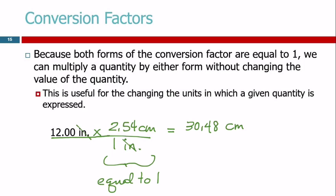What about significant figures? How many sig figs does 12.00 inches have? You might see 12 inches, associate it with 1 foot equals 12 inches, and think it's an exact number — but this is just a measurement of a length, so 12.00 inches has four sig figs. They redefined the inch to be exactly equal to 2.54 centimeters, so this is an exact relationship. Exact numbers do not limit the number of significant figures in your answer. The starting value had four sig figs, so the answer has four.